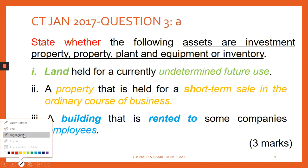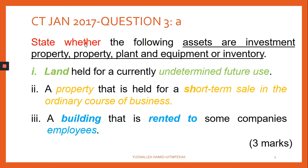Let's look at question 3A. You are to state whether the following assets are investment property, property plant and equipment, or inventory. So you need to decide whether it is an IP, a PPE, or inventory. The first one: land held for a currently undetermined future use. I've already highlighted some important keywords there.